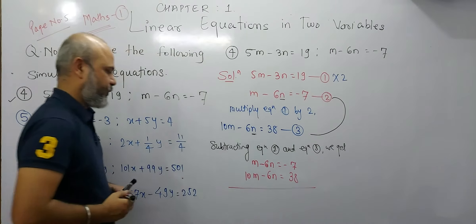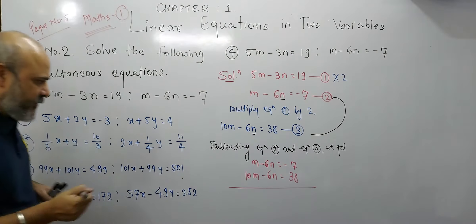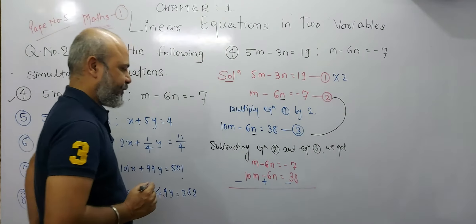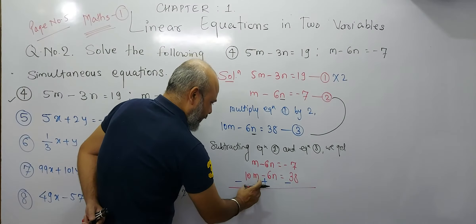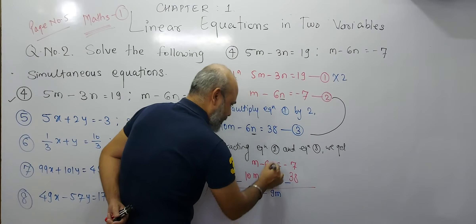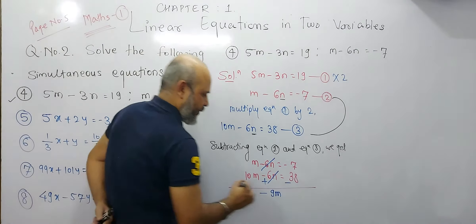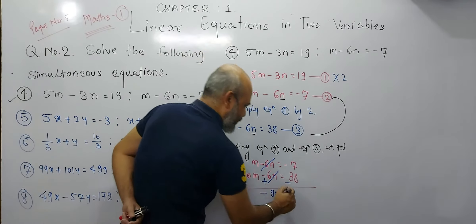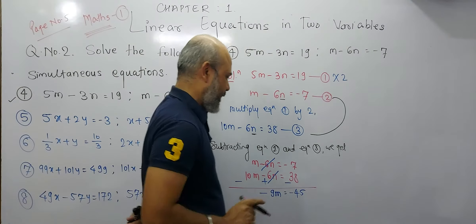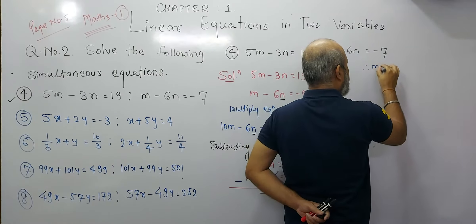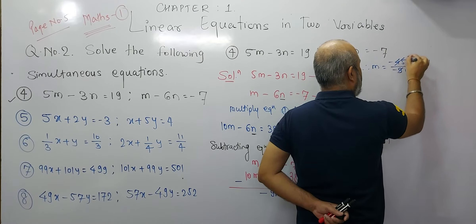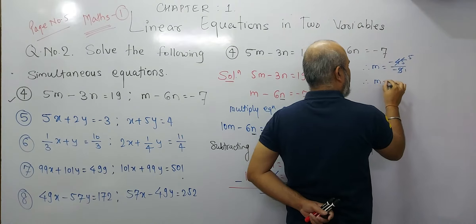While subtracting, the sign will change: plus becomes minus, minus becomes plus. So when we subtract, we get plus 1m minus 10m, which gives minus 9m. The minus 6n and plus 6n cancel out. And we get minus 7 minus 38, which is minus 45. So minus 9m equals minus 45. Therefore, m equals minus 45 divided by minus 9. Since 9 times 5 equals 45, m equals 5.